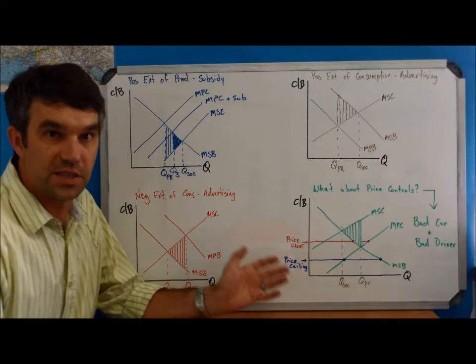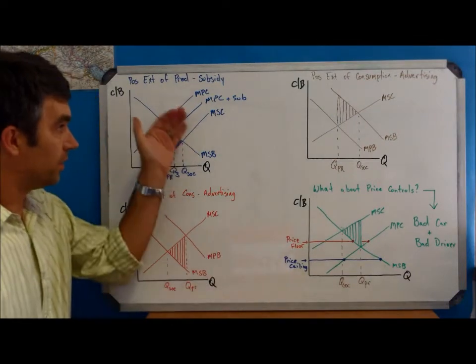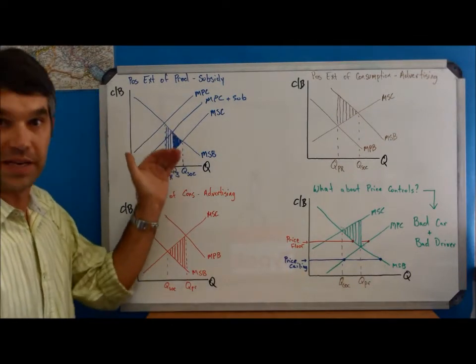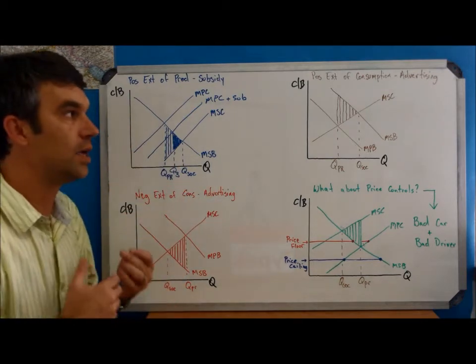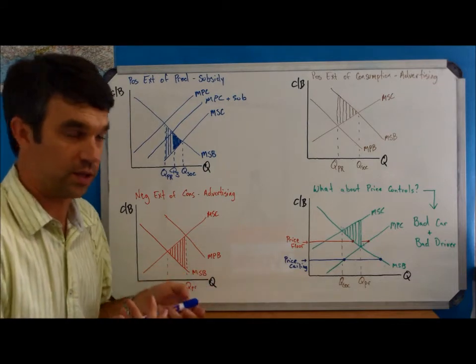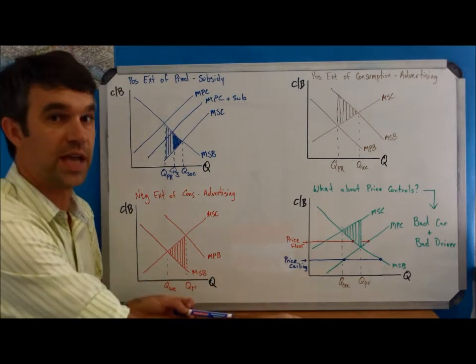We've seen how subsidies and taxes can work to move the MPC curve up and down and get our private quantity closer to our social quantity. Let's think about some other ways that we can do this though that don't involve a tax or a subsidy.